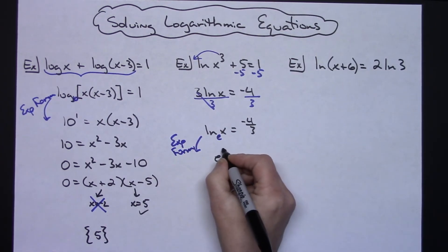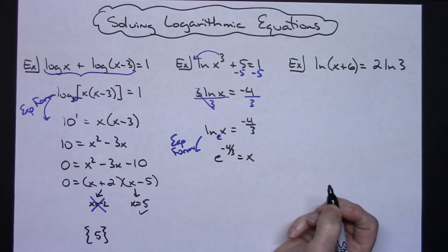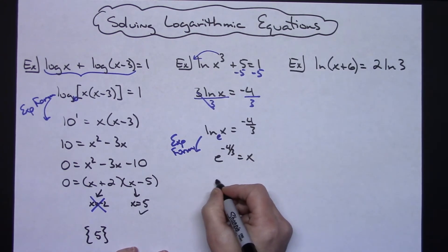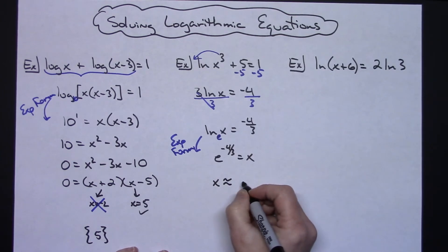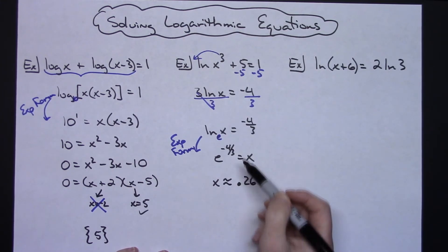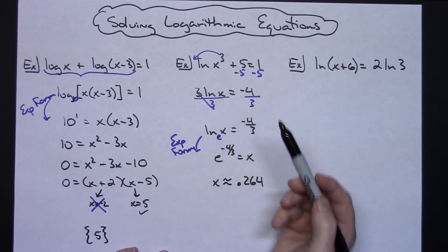You might be able to leave the answer like that. If not, you could get a calculator and then get the decimal approximation for that, so X would be approximately 0.264.